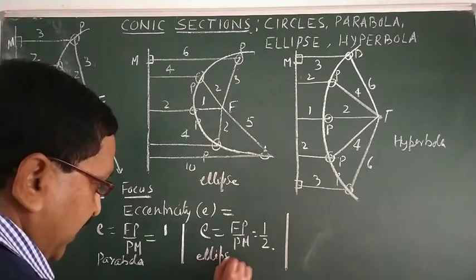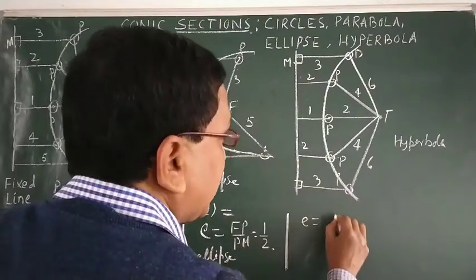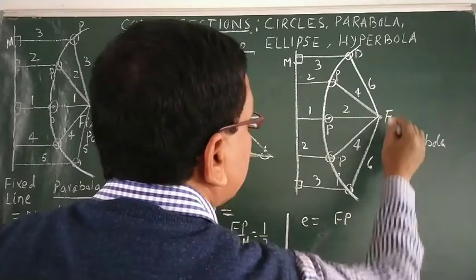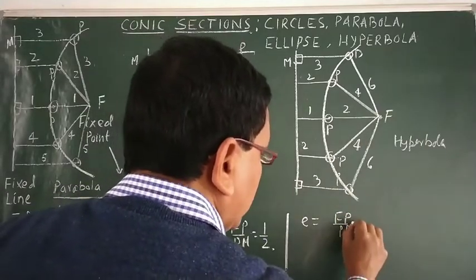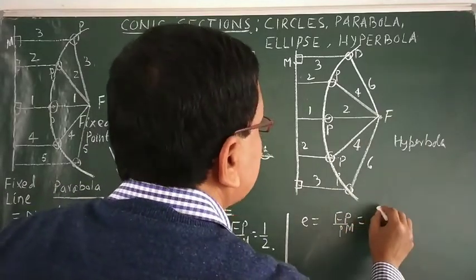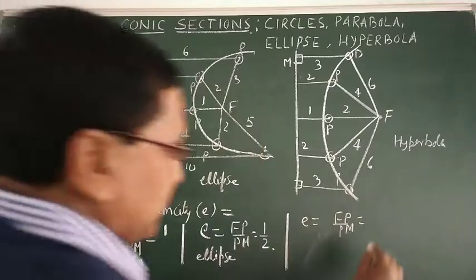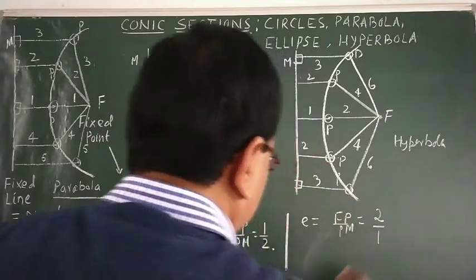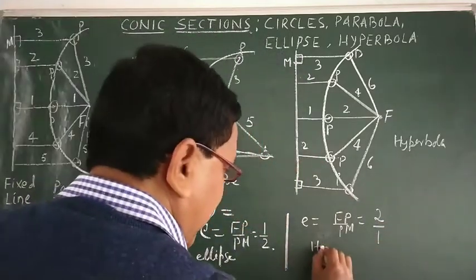And this is for hyperbola: e equals FP by PM — six by three is two by one, so e equals two. So this is for hyperbola.